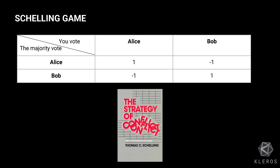That's the Schelling game. When you look at the payoff matrix, voting for Alice or Bob looks the same — it's a symmetric matrix without labels. But in practice you have the labels: you know Alice tried to put a cat into the list. So you'll say most people are going to reject the cat, meaning I should reject the cat to vote the same way as others.